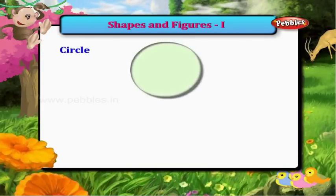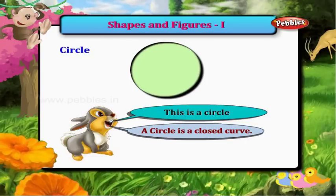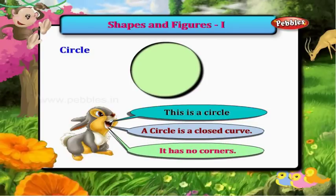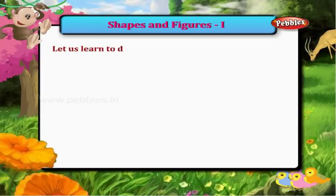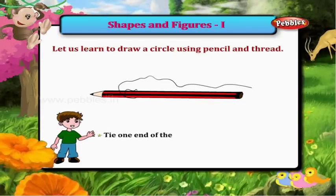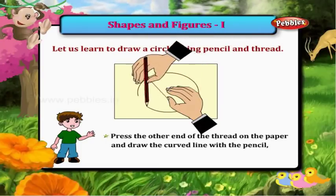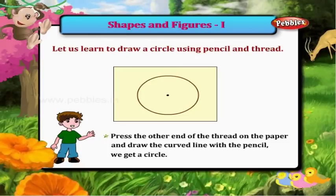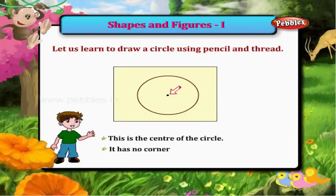Circle. This is a circle. A circle is a closed curve. It has no corners. Let us learn to draw a circle using a pencil and thread. Tie one end of the thread to the pencil as shown. Press the other end of the thread on the paper and draw the curved line with the pencil. We get a circle. This is the center of the circle.